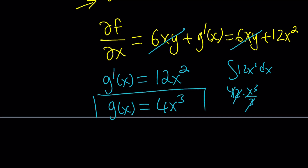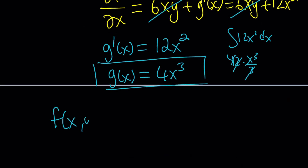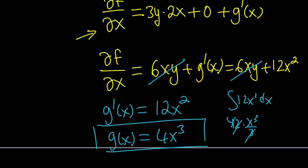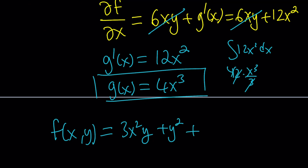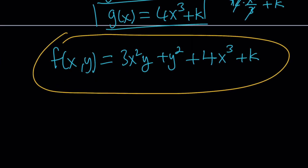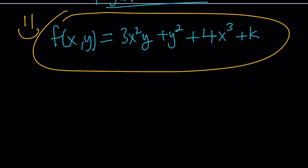So g of x was found. Therefore f of x, y equals 3x squared y plus y squared plus 4x cubed. One thing we also need to add: when we integrate, we always get a constant, so g of x also includes a constant c. So the final answer for f of x, y is 3x squared y plus y squared plus 4x cubed plus c. And this brings us to the end of this video. Thank you for watching — please comment, like, and subscribe. I'll see you next time. Until then, be safe, take care, and bye-bye.